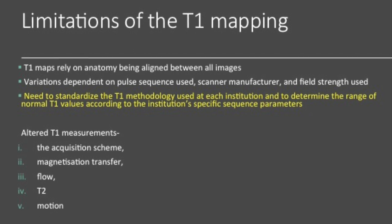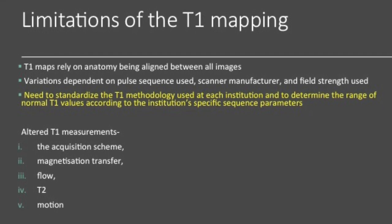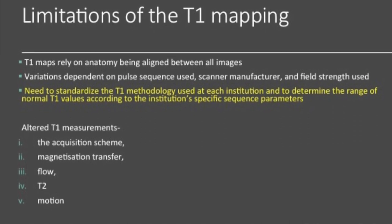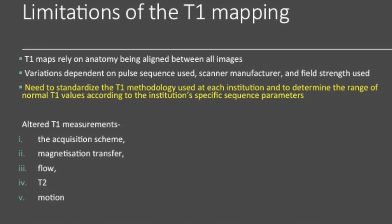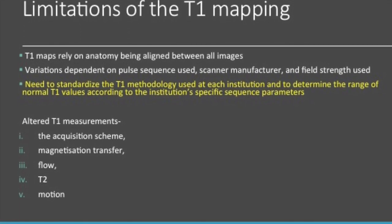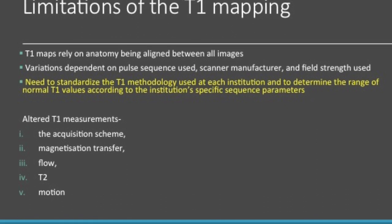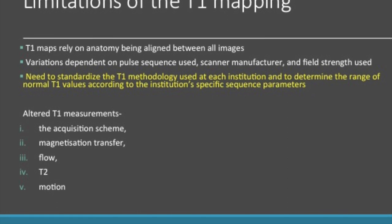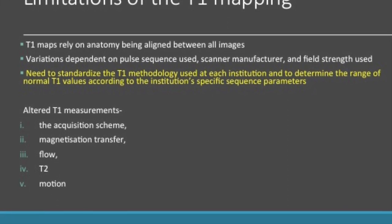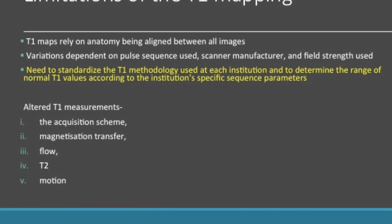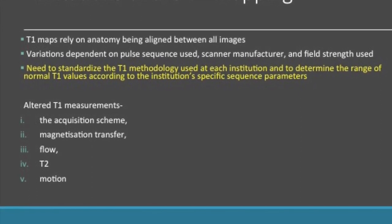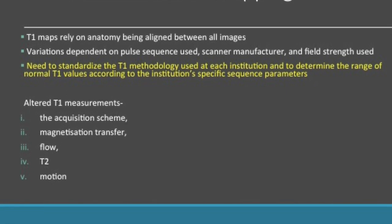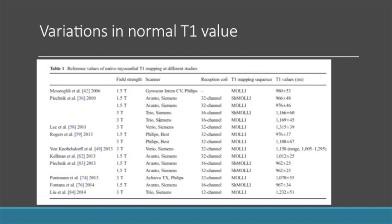Regarding limitations of T1 mapping: first, T1 maps rely on anatomy being aligned between all the images, hence the need for motion correction. Second, it is important to standardize the T1 methodology at each institution and to determine the range of normal T1 values at your scanner. Finally, the normal native T1 value, whether on a 1.5 Tesla or 3 Tesla system, is in the range of 1 second or 1000 milliseconds — slightly less for 1.5T and slightly more for 3T.